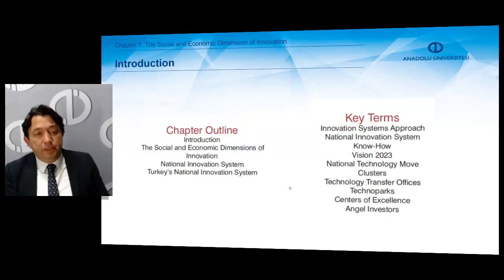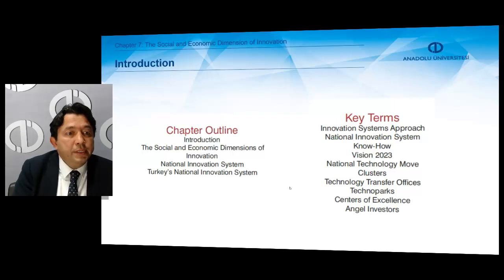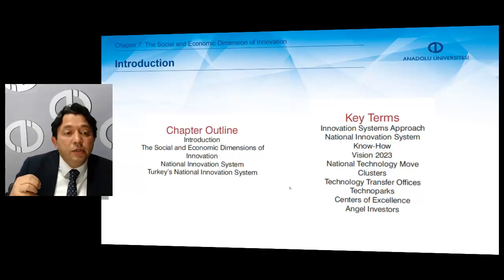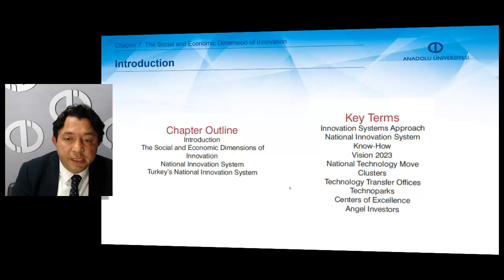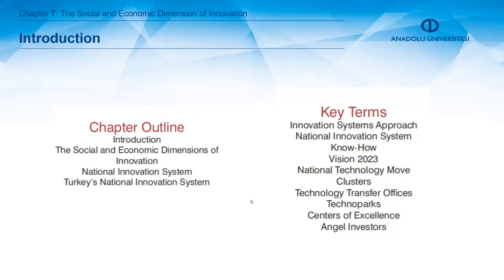Our chapter consists of three subsections. The first subsection is about the social and economic dimensions of innovation. The second subsection is titled National Innovation System, which gives detailed information about the innovation system approach and what we aim by conducting a national innovation system. The third subsection provides detailed information about Turkey's national innovation system, including its development, important actors, and structure.